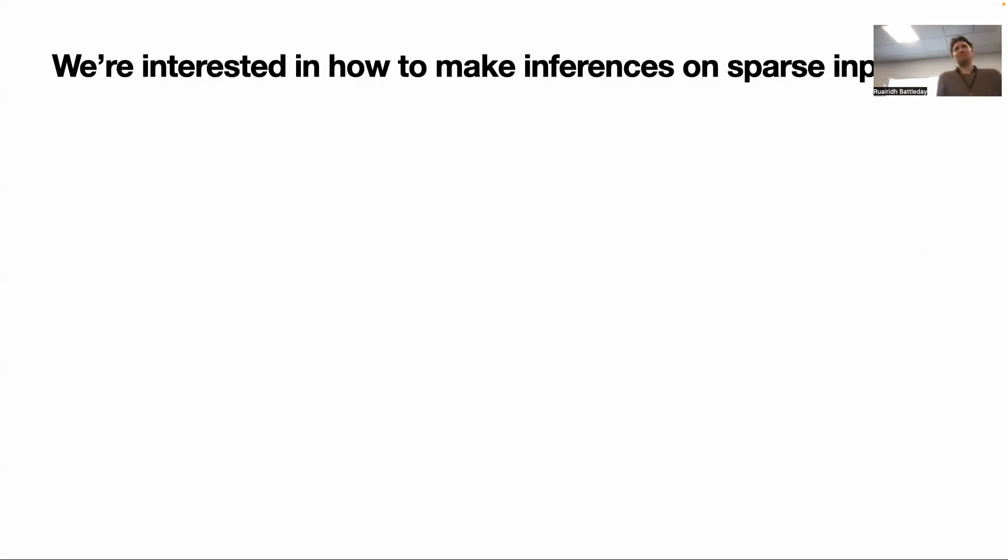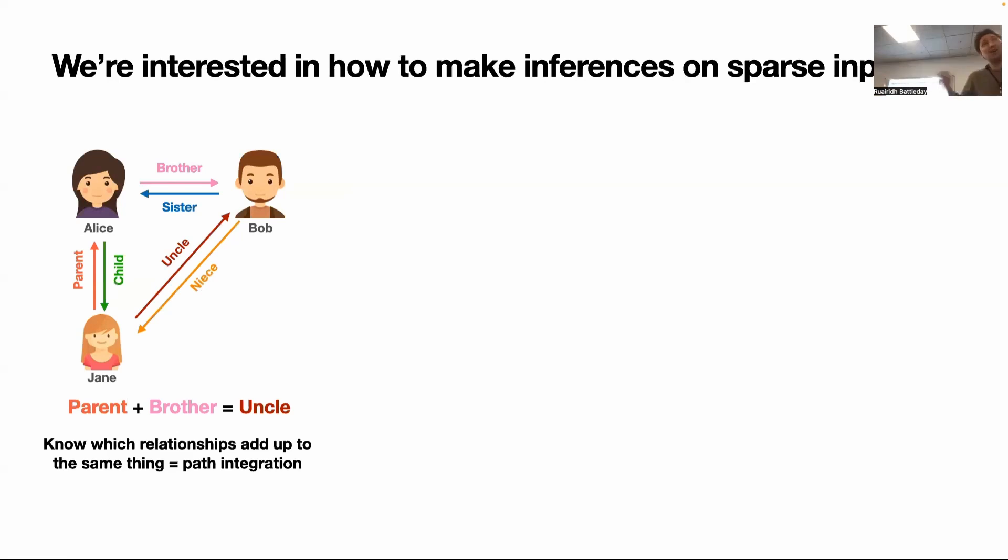I'm going to jump straight into the sorts of problems we're interested in trying to solve. It's really a problem of flexible understanding, a bit of high-level cognition. I'm going to tell you that Jane's mother is Alice and Alice's brother is Bob. I've told you two pieces of information, but with those two pieces of information you actually know more. You know, for example, that Bob is Jane's uncle. You know all of these other relationships as well. I only told you two things, but you can infer many, many more.